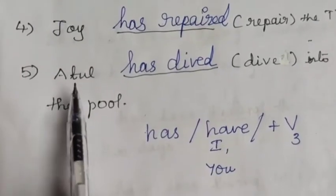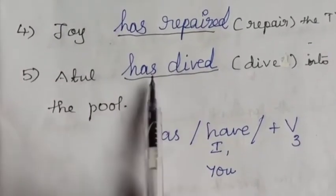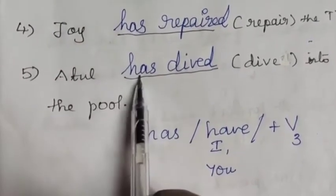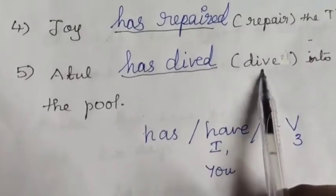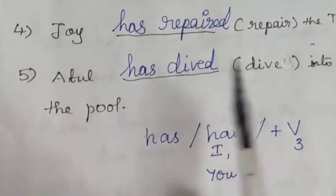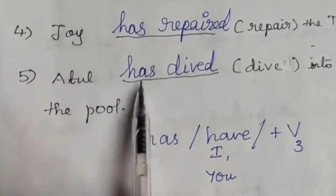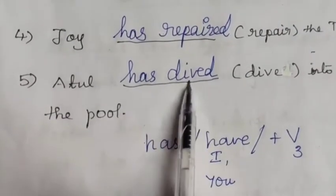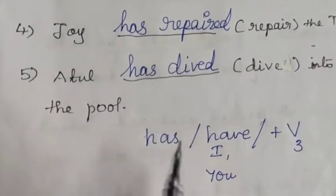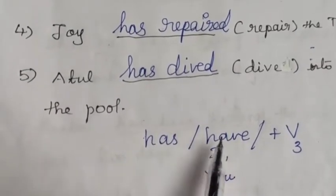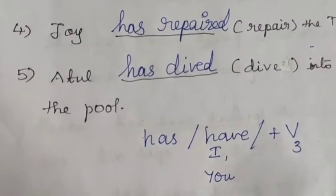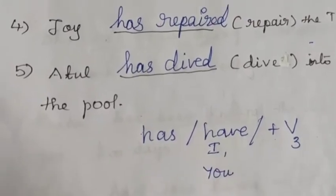Fifth: 'Atul has dived into the pool' — Atul is singular, so we write 'has', and verb 3 of dive is 'dived'. Remember: singular subject takes 'has', plural subject takes 'have', plus verb 3.